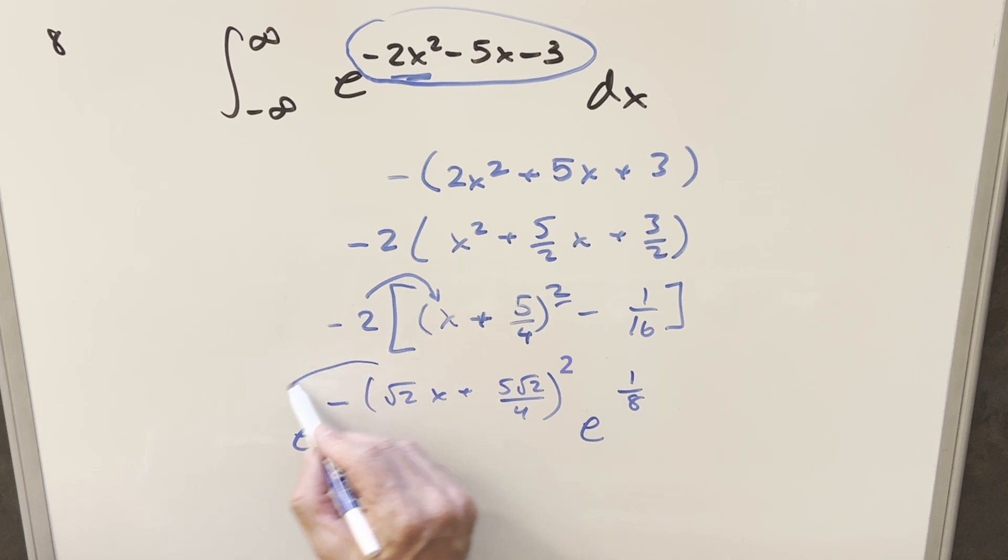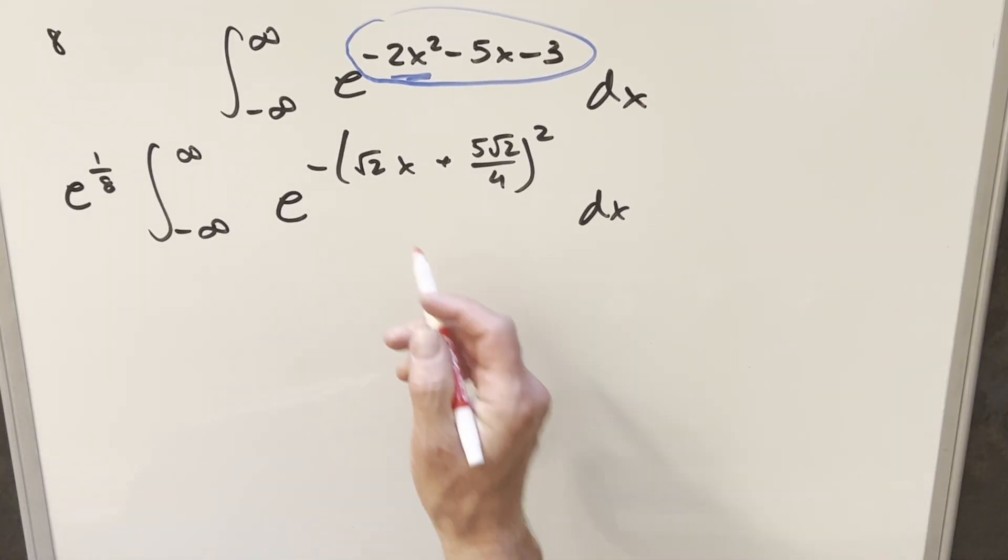We can write this as this thing times e to the 1 over 8. And then let's take all this, put it back in the integral, but the e to the 1 over 8, this I can bring out front of the integral, because this is just going to be a constant.